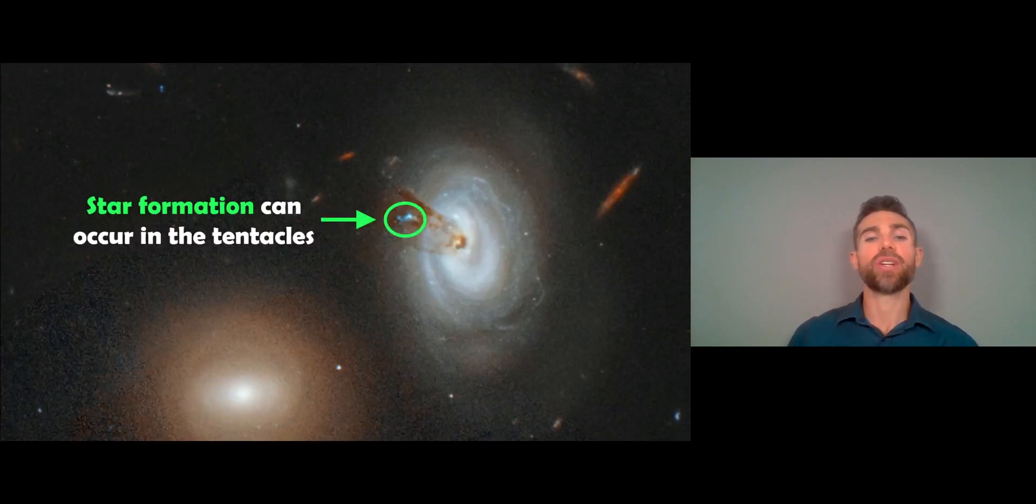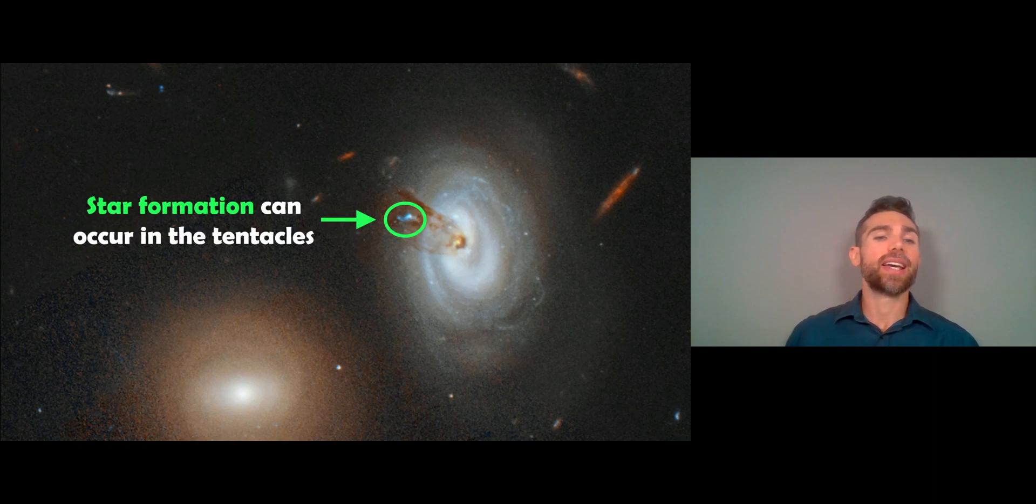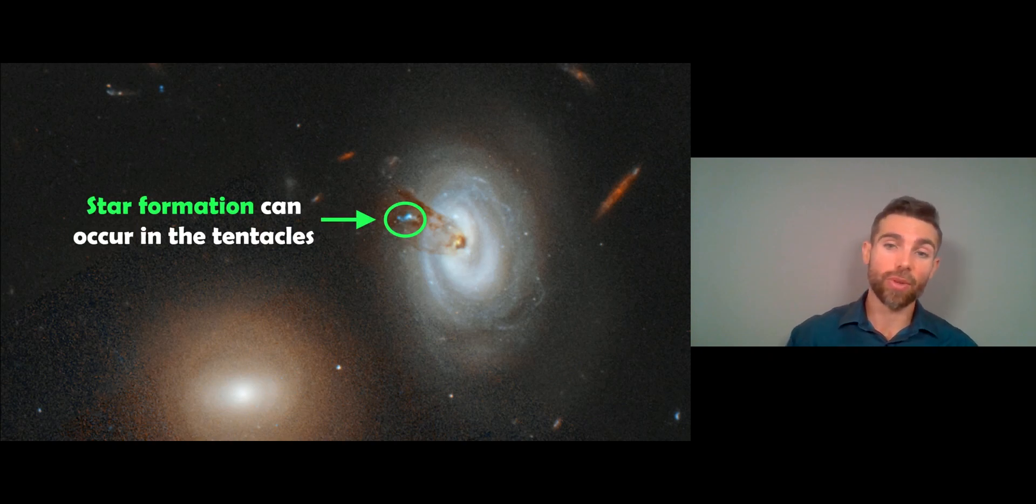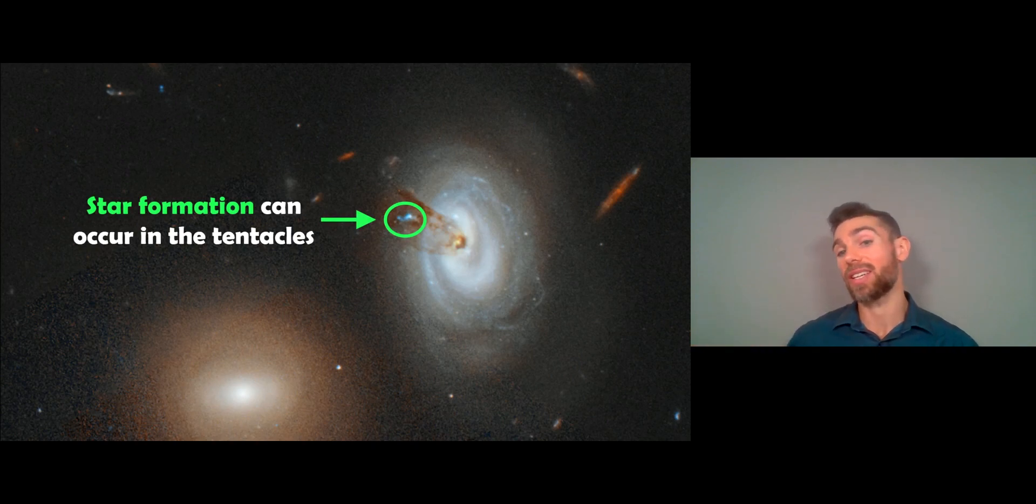A really interesting thing here is that stars can then form in those tentacles as well. In this example you've got the tentacles coming out from the main galaxy but then you've got a region of star formation. You've got a high enough density and the gas is actually gravitationally collapsing, you can then form stars in the tentacles themselves. It's not just confined to forming stars in the actual galaxy itself, they can form outside the main galaxy in its tentacles as well.